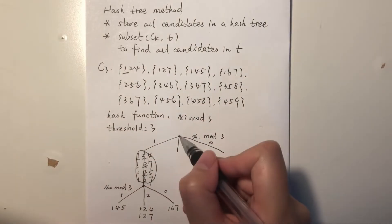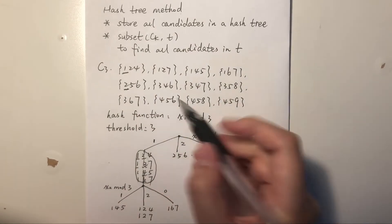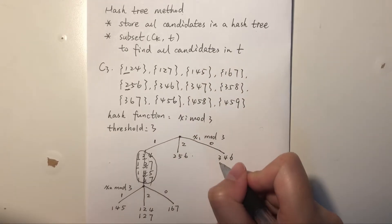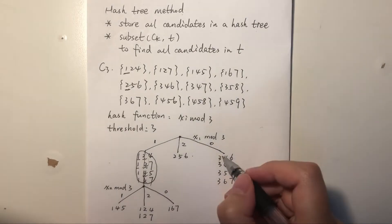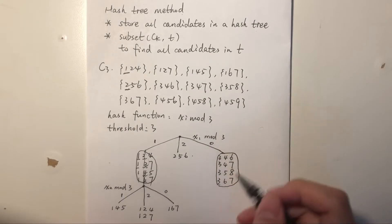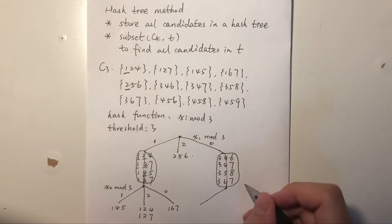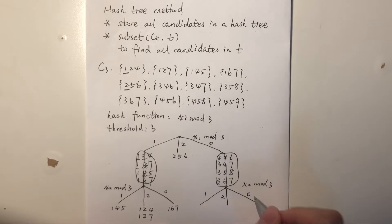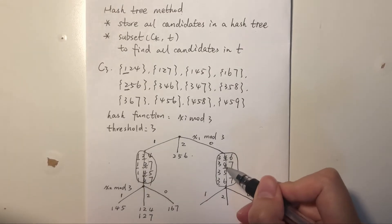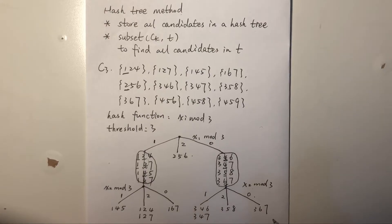Next, candidate {2,5,6}: starting from the root, 2 mod 3 = 2, so it goes to this branch. Then {3,4,6}: 3 mod 3 = 0, so it goes here. Similarly {3,4,7}, {3,5,8}, and {3,6,7} all start with 3 and go to the same branch. This node exceeds the threshold again, so we need to split it at level 2 using x_i mod 3 on the second element. These two candidates come here, and {3,5,8} goes to this branch.